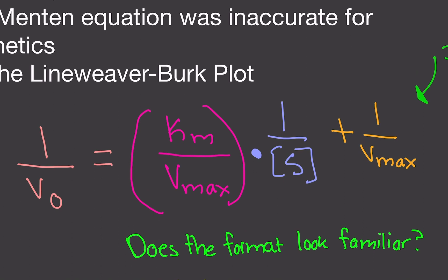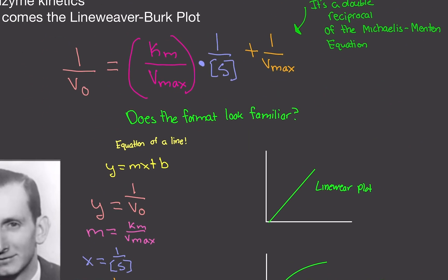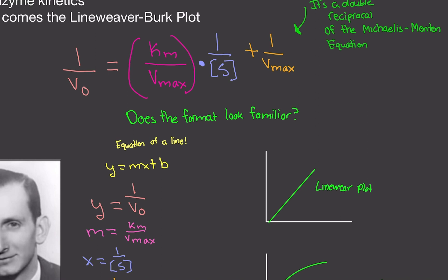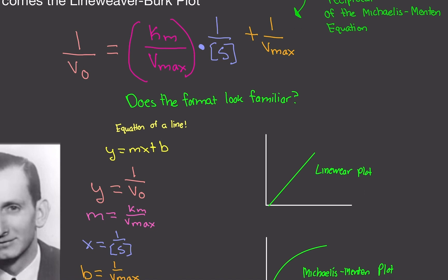Here's what we have: one over the initial velocity is equal to Km over Vmax times one over the substrate concentration, plus one over Vmax. Does this format look familiar? Back in algebra, you learned about the equation of a line — that's exactly what this is. Y equals one over initial velocity; M, or the slope, is Km over Vmax; X is one over the substrate concentration; and B, or the Y-intercept, is one over Vmax.